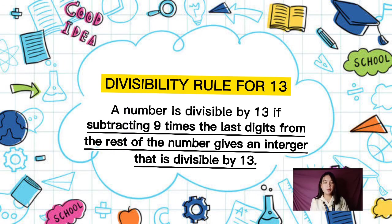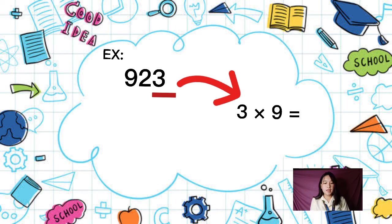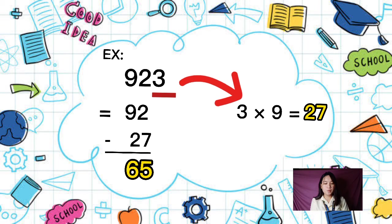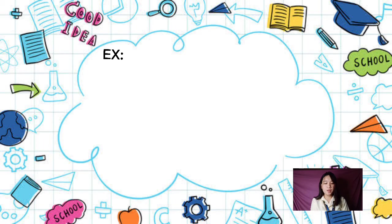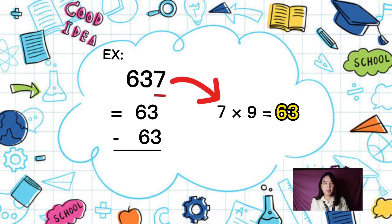A number is divisible by 13 if subtracting 9 times the last digit from the rest of the number gives an integer divisible by 13. For example, 923: the last digit is 3, so 3 times 9 is 27, and 92 minus 27 is 65. Since 65 is divisible by 13, 923 is divisible by 13. Another example, 637: move 7, so 7 times 9 is 63, and 63 minus 63 is 0, which is divisible by 13.